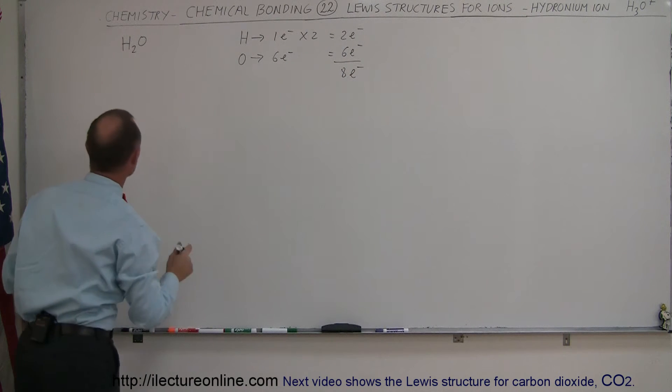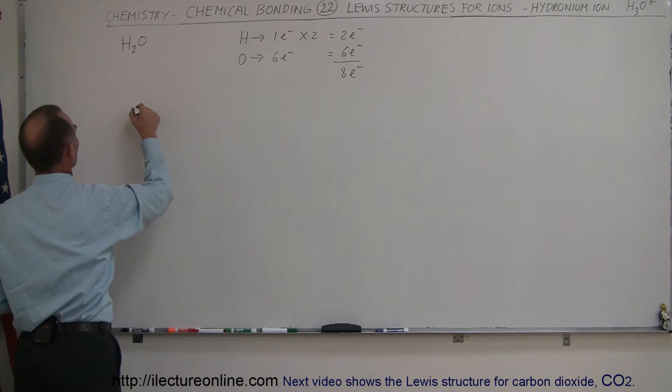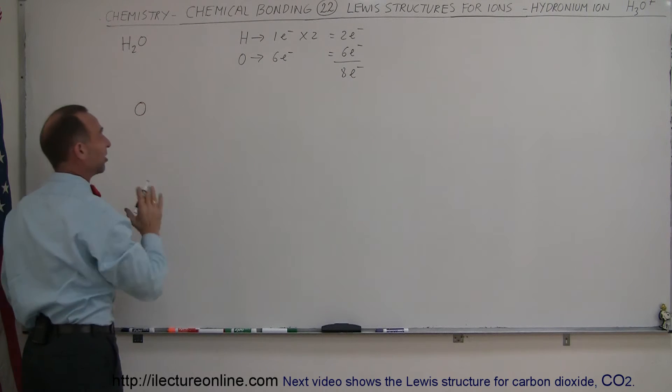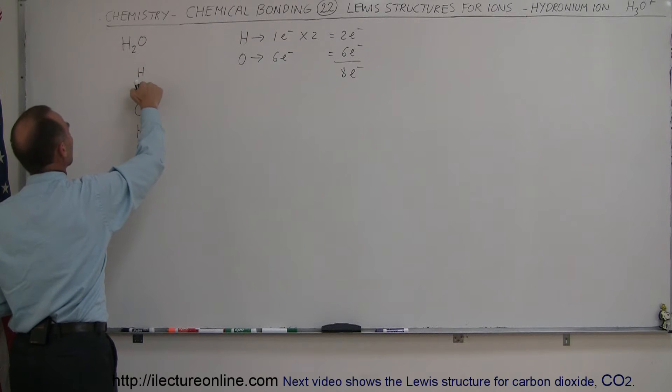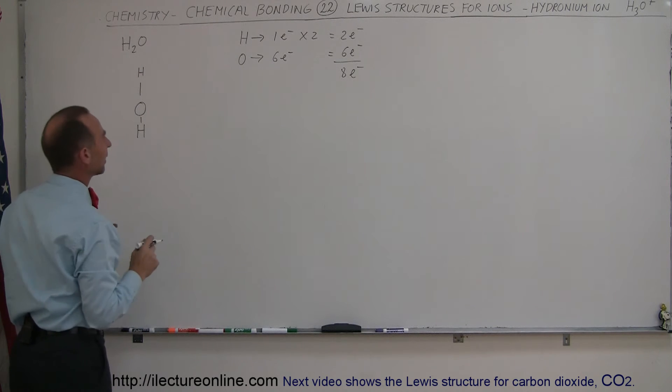So if we're going to draw a water structure, it looks like this. We have an oxygen in the middle, because that's the only atom here that can make the central structure. And we have a hydrogen over here and a hydrogen over there, making a bond like that. The hydrogen single atom is used in the bond here. The hydrogen single atom is used in the bond there.